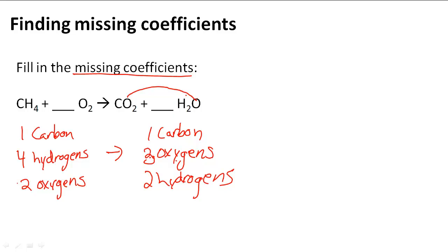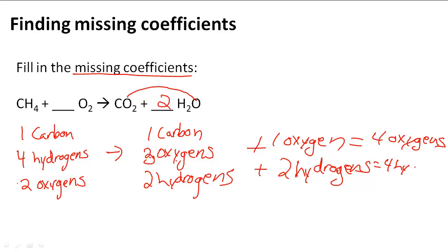That gives me two extra hydrogens, plus one extra oxygen because I added another H₂O. So that becomes four oxygens and four hydrogens total on the products side.